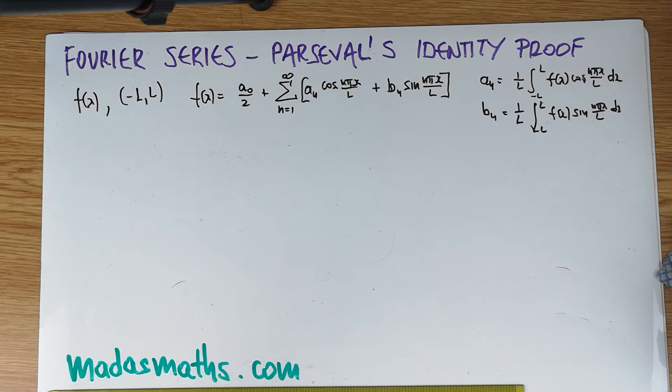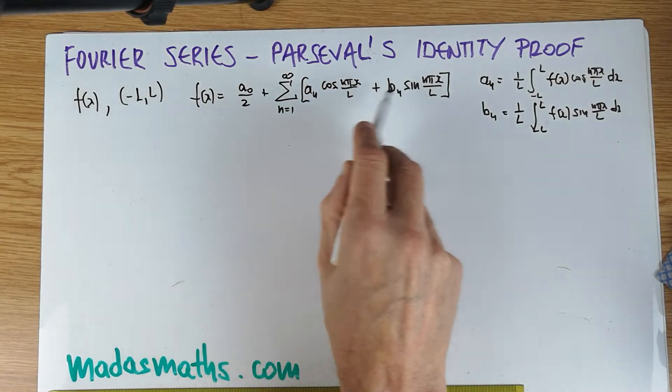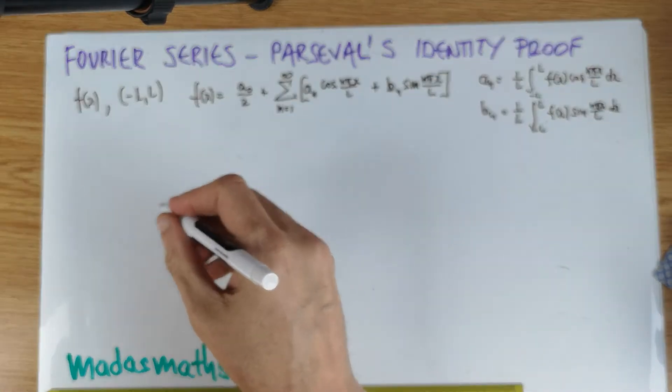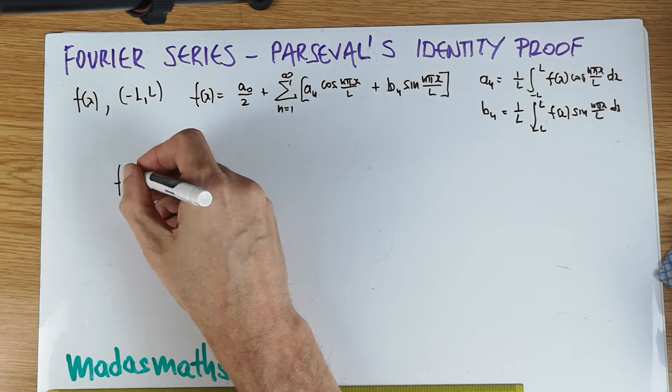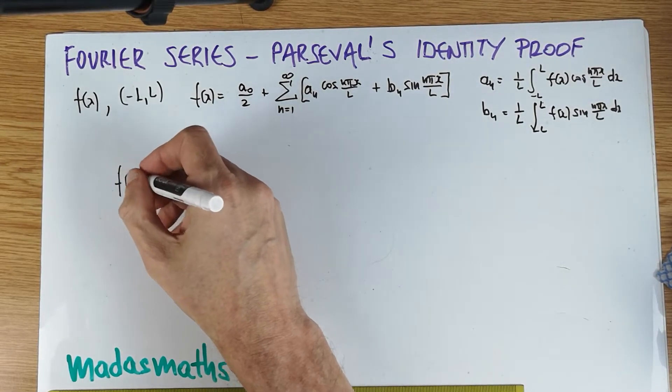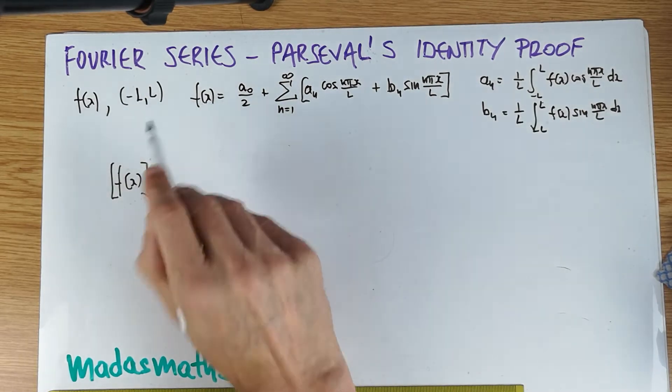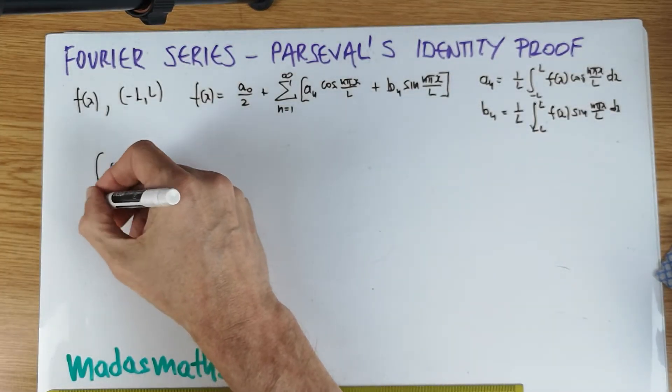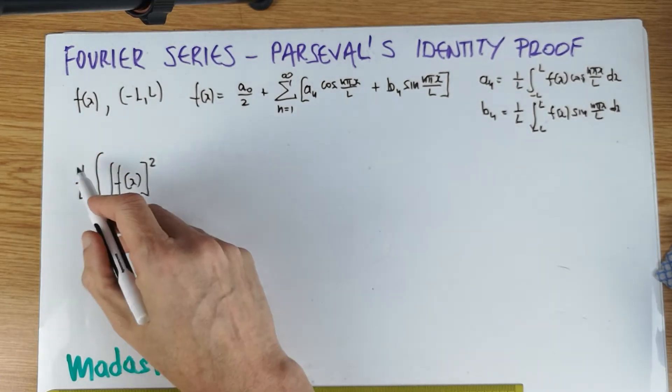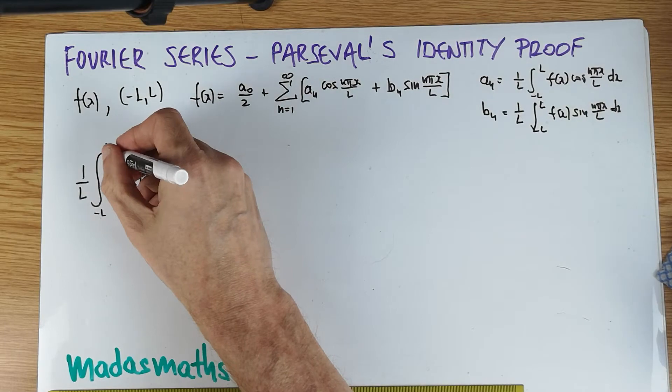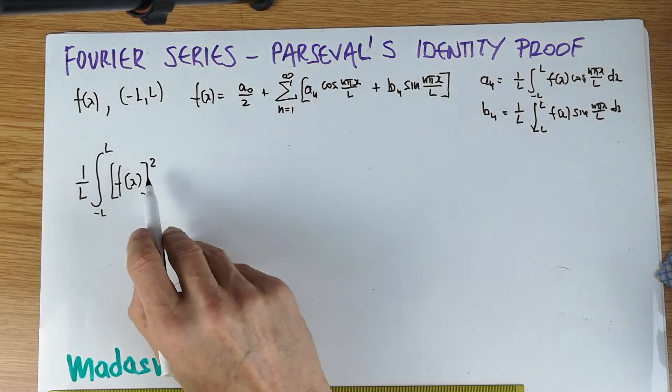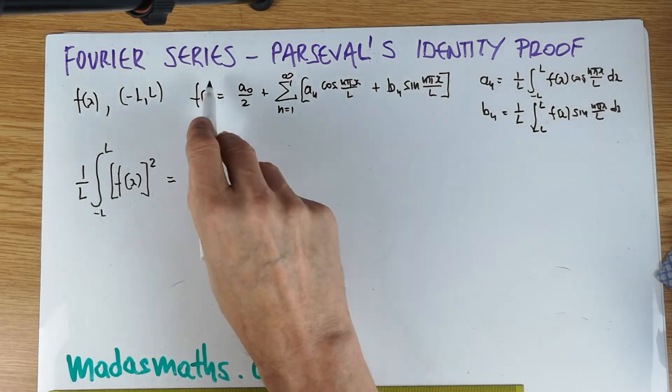So this is the Fourier series of a function on a particular interval. We now try to prove Parseval's identity. In order to prove Parseval's identity, we'll come to it and I'll put in a nice colorful border at the very end. We take the definition of f of x as a Fourier series and multiply it first of all by f of x.